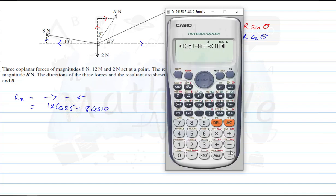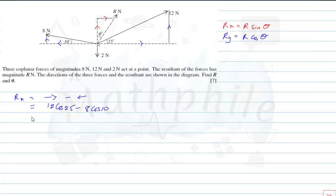Calculating this gives us 2.997, so the resultant in the x-direction is 2.997 newtons.